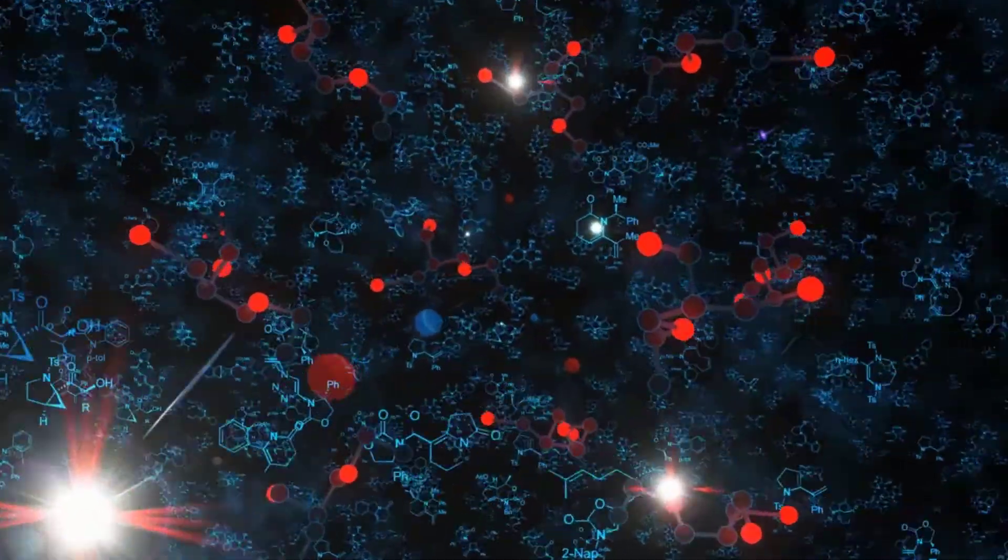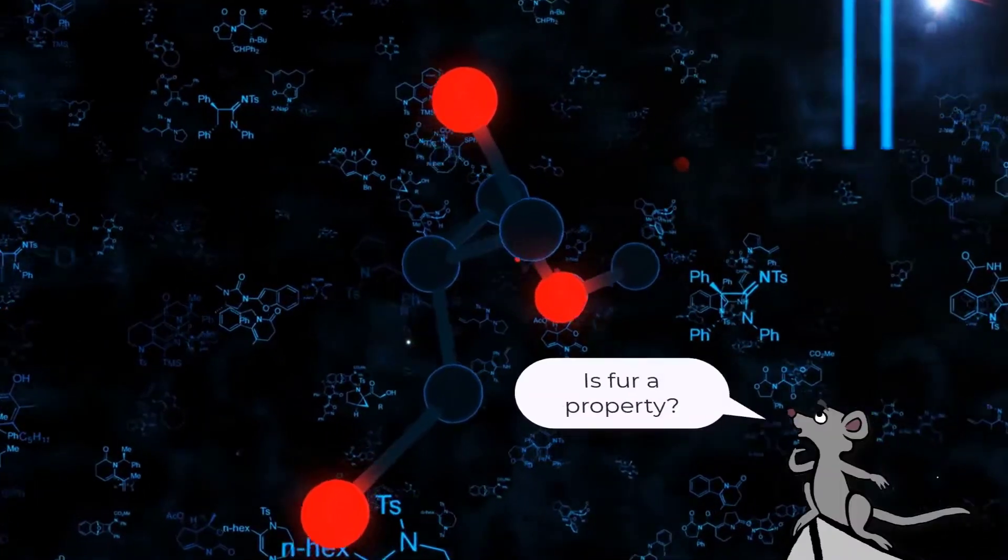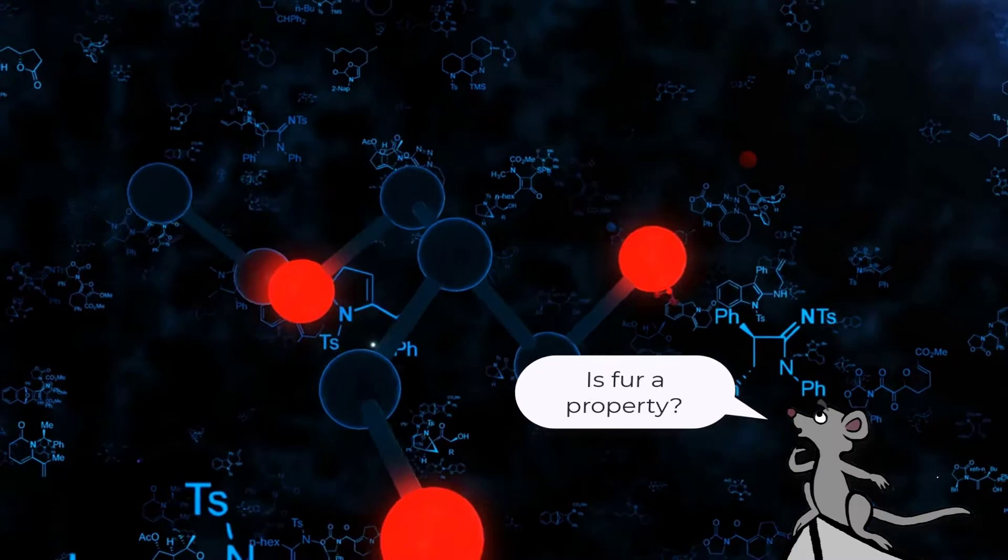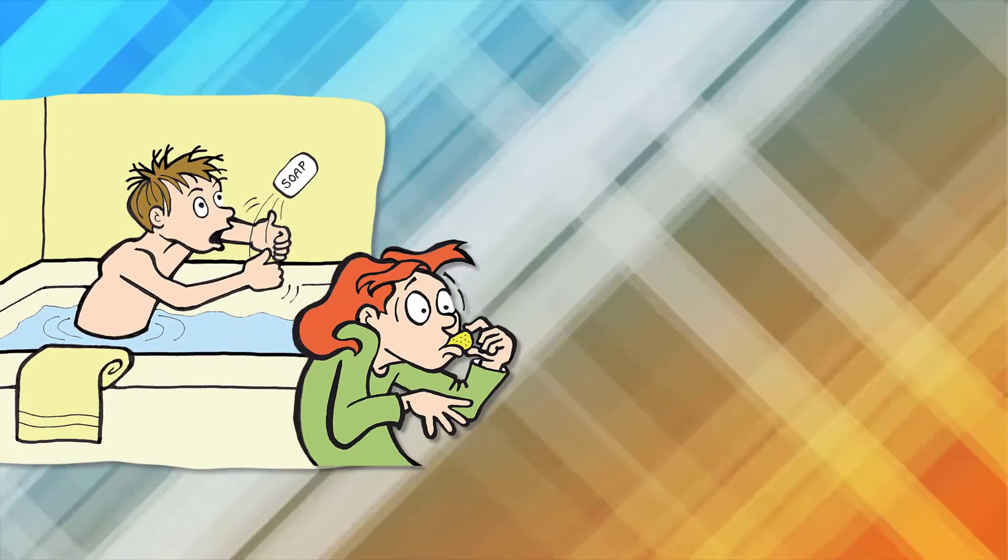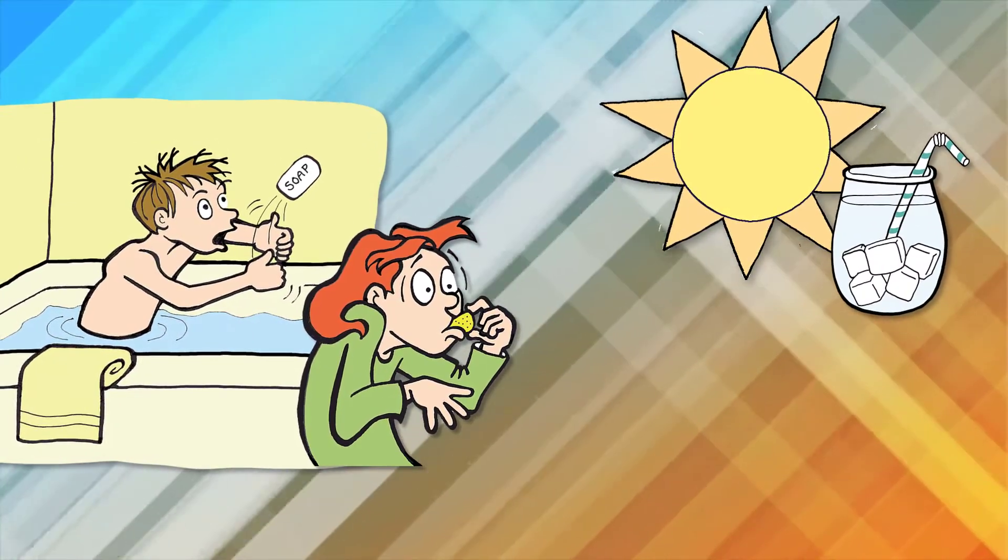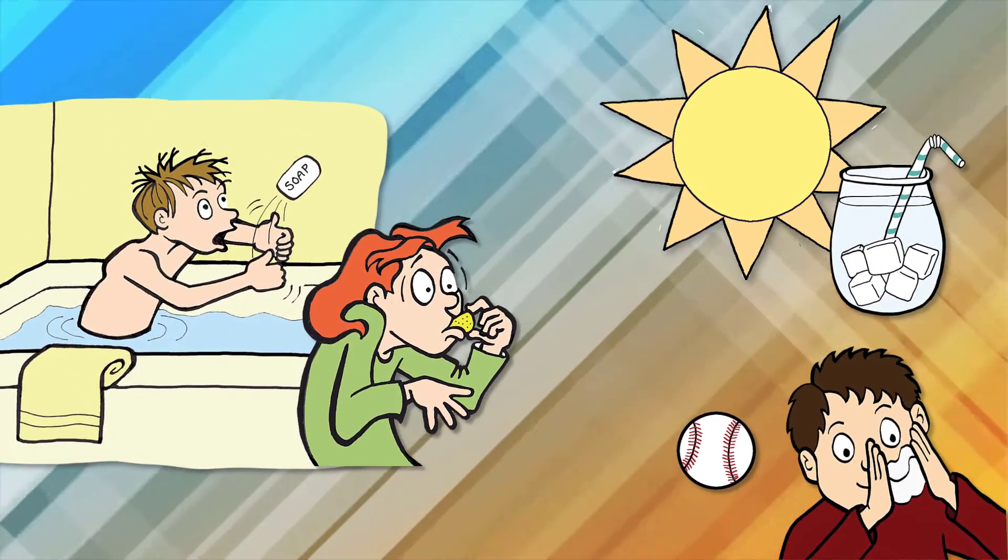Molecules have different properties. Properties describe what something is like. Slippery and sour are properties. Hot and cold are properties. Hard and soft are properties.